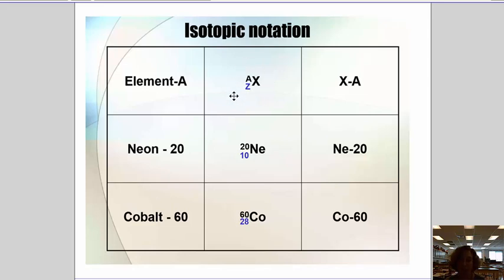We can use the symbol and we write the mass number as A up here and Z, the atomic number at the bottom. Or sometimes we'll just write the A and leave off the Z. So neon-20 would be written like this. The 20 comes from the mass number here. 10 comes from the atomic number on the periodic table.